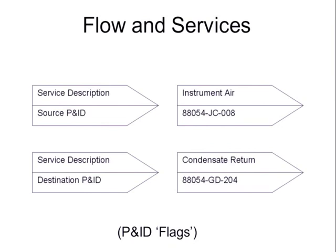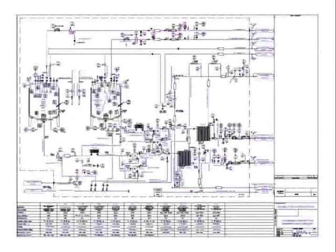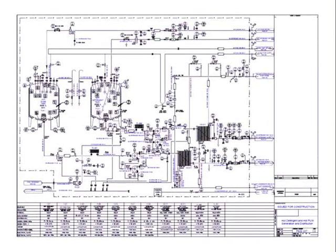Looking at flags: when you see a flag, we see a service description and a source P&ID. For example, instrument air coming in from P&ID 008. We will also see a service description such as condensate return, with a destination P&ID — in this case, P&ID 204. Let's look at our own P&ID for some examples: two flags at the extremes, at the extreme left and right of the P&ID.